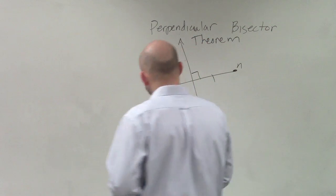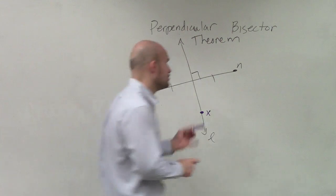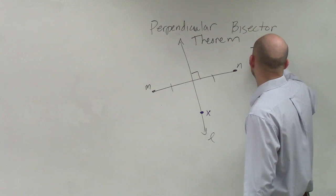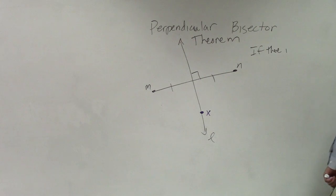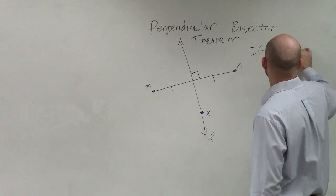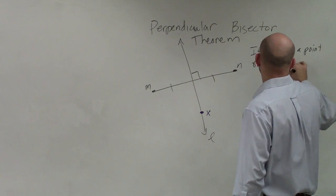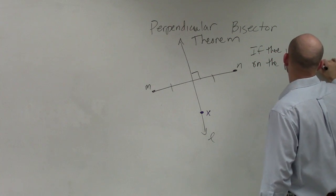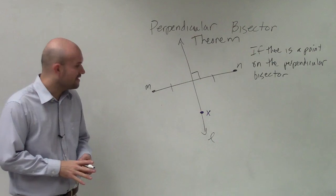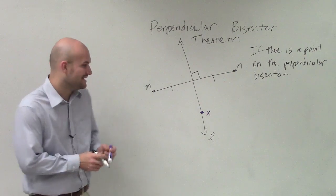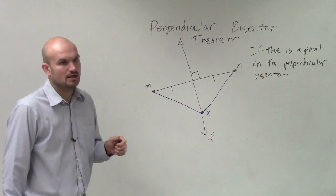So if we have a point X on our perpendicular bisector. The perpendicular bisector says, if there is a point on the perpendicular bisector, then what it tells us is that point is equidistant to the endpoints of our segment.